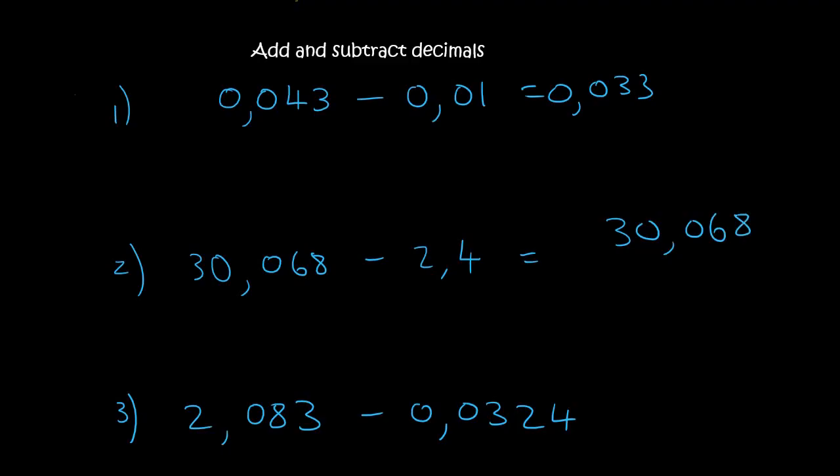30.068 minus, now where do I put the 2.4? I don't do this, for example. Why? Because the commas must be underneath each other. Like that. And then you fill it in just like this. So the 2 is next to the comma, and the 4 is next to the comma. Any open spaces? No problem. Add some 0s.